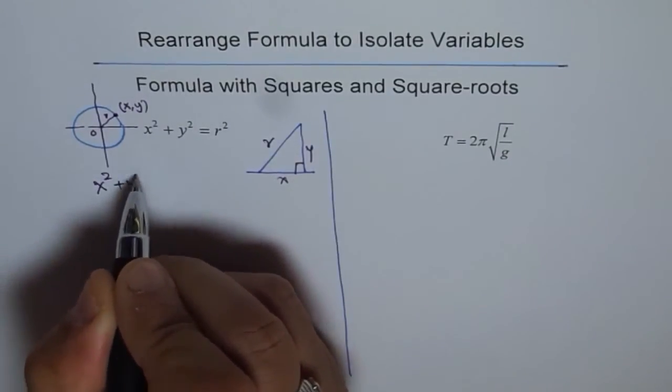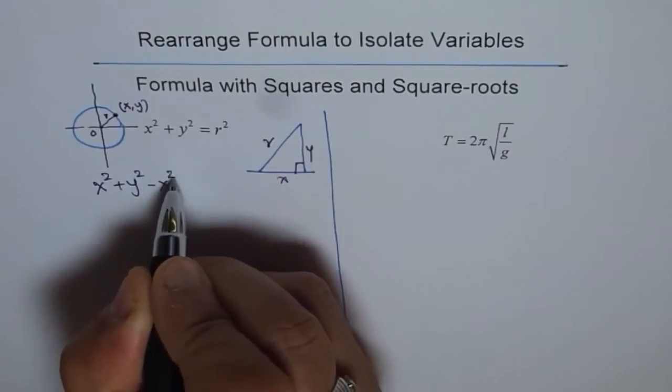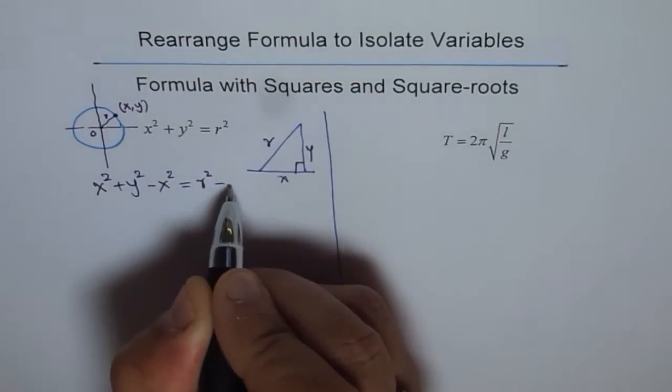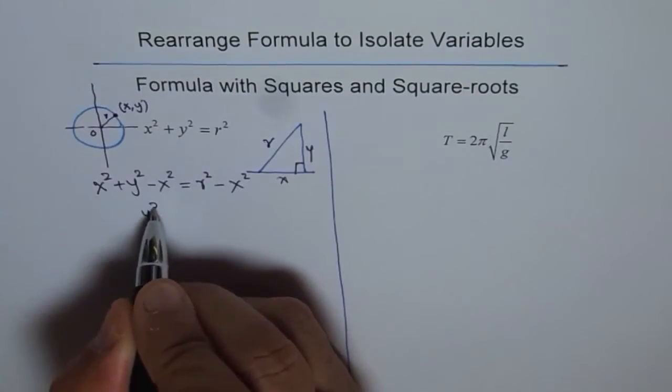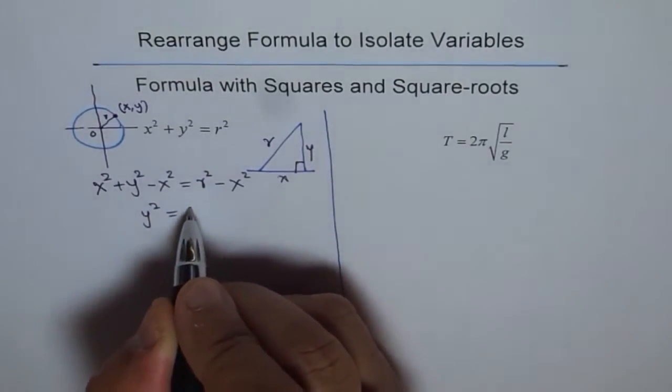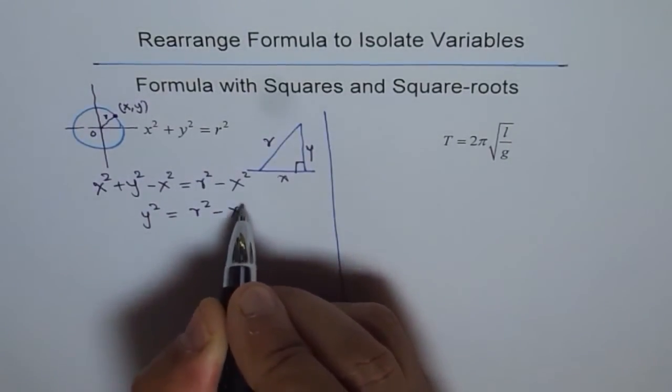On the left side, we are left with y² = r² - x². Now whenever you have square, to get y, the best thing is to do square root.